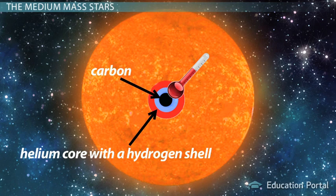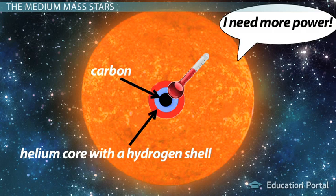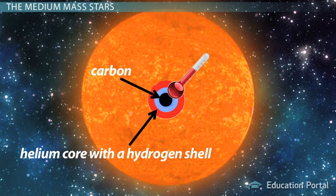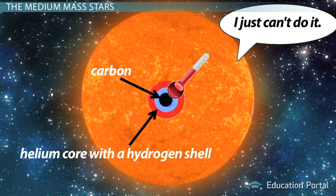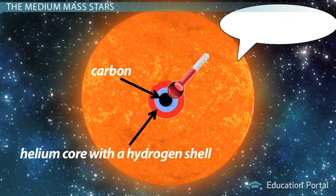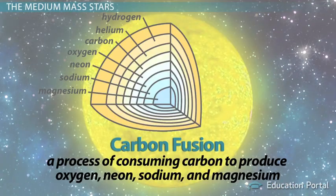But the carbon, another potential source of fuel for the star, must ignite at even higher temperatures than the helium core. And here is where the medium mass stars face a big problem. They're not massive enough to contract this core to raise its temperature high enough to start the process of carbon fusion, a process of consuming carbon to produce oxygen, neon, sodium, and magnesium.